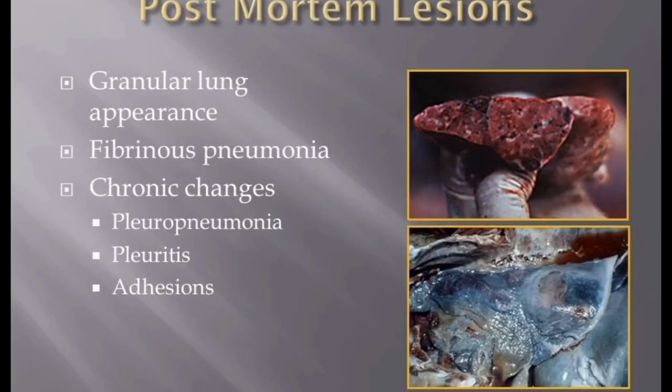The lesions of Contagious Caprine Pleuropneumonia are limited to the respiratory system. Typical postmortem findings include the granular appearance of one or both lungs and fibrinous pneumonia, in which the lung is covered with fibrin and there is excessive fluid in the thoracic cavity. Some long-term survivors have chronic pleuropneumonia or chronic pleuritis with encapsulation of acute lesions and numerous adhesions to the chest wall.